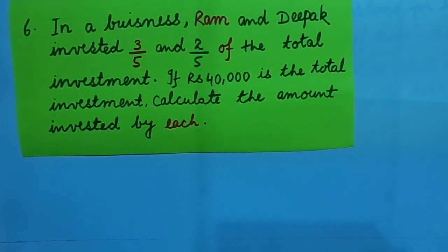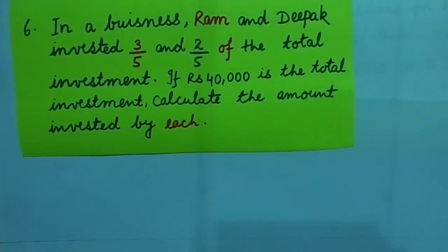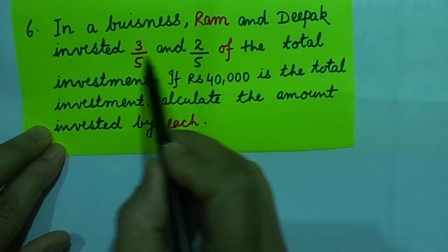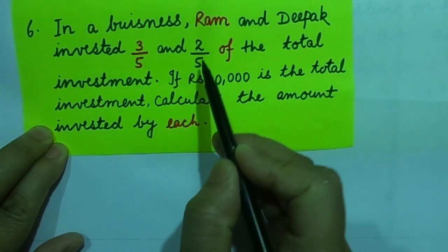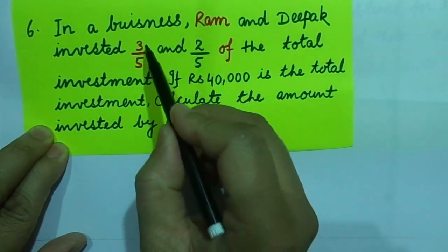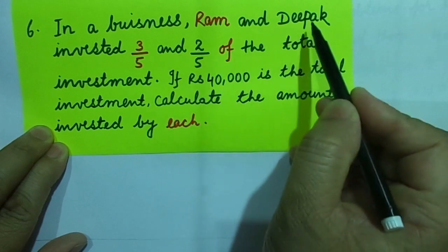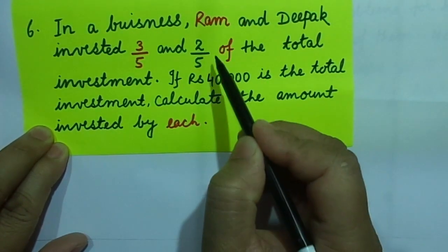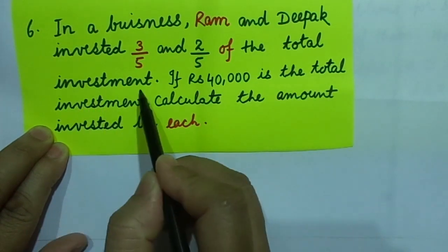We have done from one to five. In question number six, what we have in a business: Ram and Deepak. Ram and Deepak invested three by five and two by five. Ram invested — I have marked it in red — Ram invested three by five, while Deepak two by five. Here lies the danger: of the total investment.